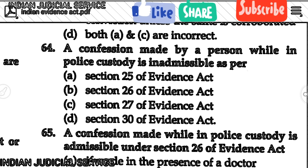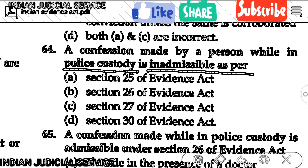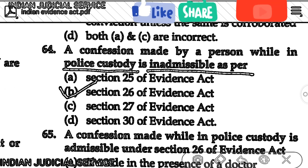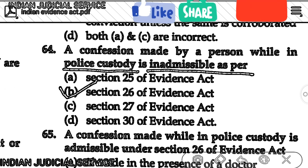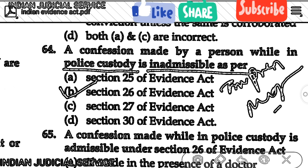Question number 64: A confession made by a person while in police custody is inadmissible under which section? The answer is option B — Section 26. Section 26 provides that a confession made by an accused while in police custody shall not be proved against him, unless made in the immediate presence of a magistrate, in which case it becomes relevant.